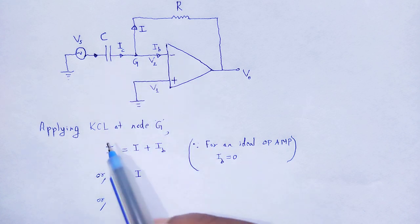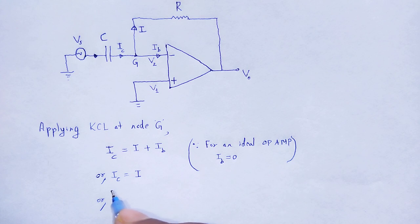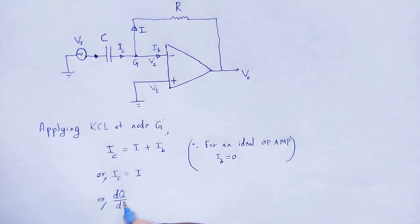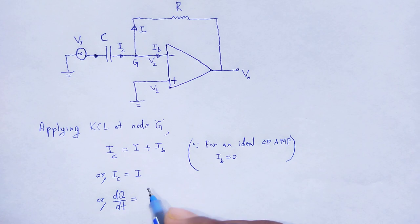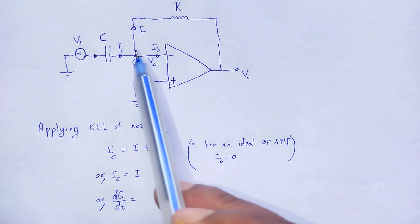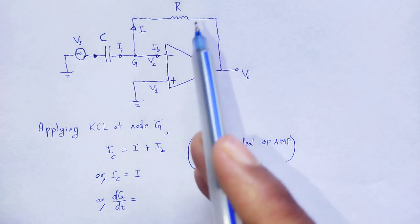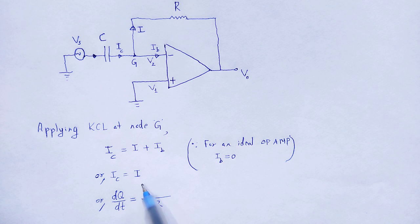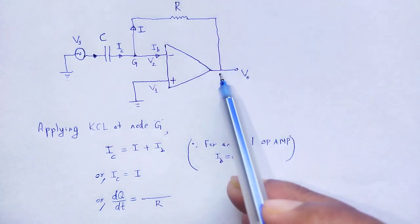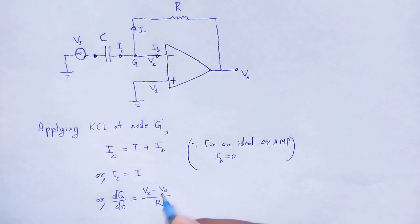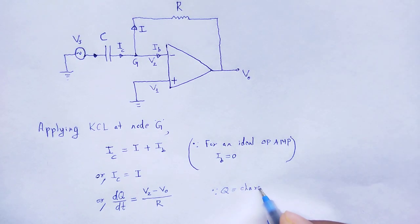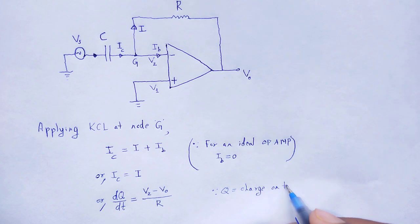IC is the current through the capacitor having capacitance C. The expression for current is the rate of change of charge, that is dQ/dt. By using Ohm's law, the current through resistor R is equal to the potential difference V2 to V0 divided by R. Here, Q is the charge on the capacitor.